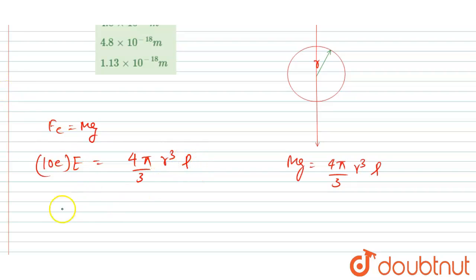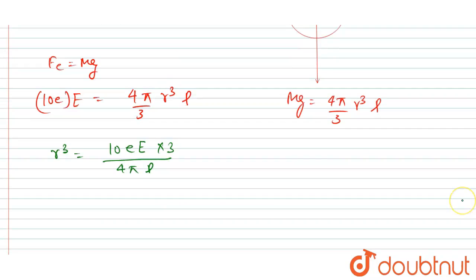So from here I can write r³ equals 10e into electric field. In division I will write 4π ρ and here I will write 3. So this will be the value of r³. So you can just put the value of this e, E, and ρ.